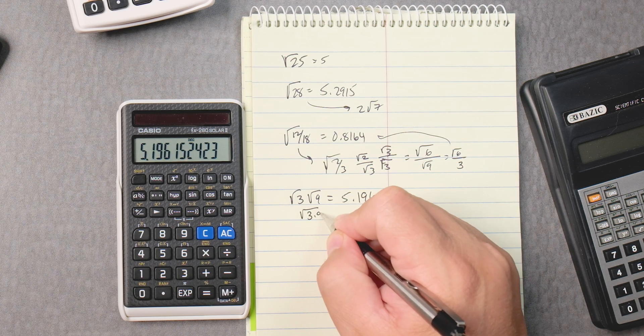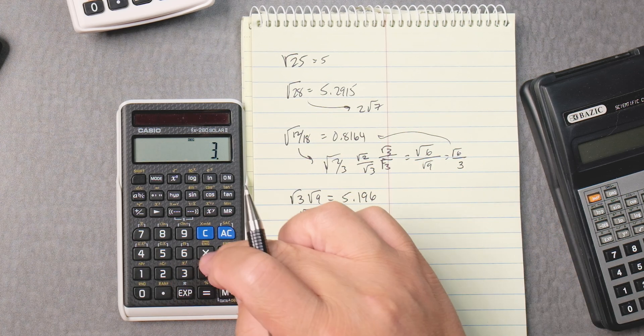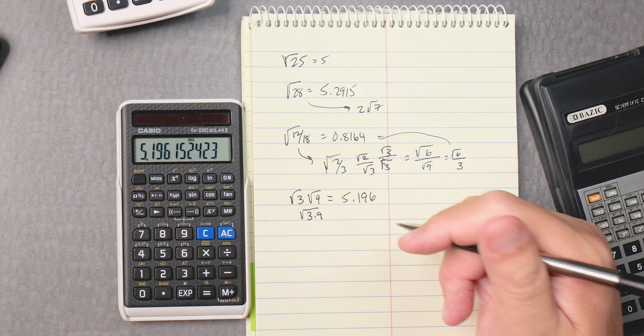Or you could have done the square root of 3 times 9. 3 times 9 equals, then take the square root, boom, same answer.